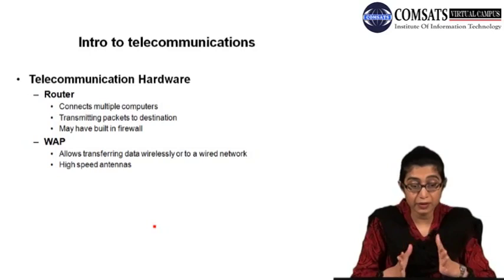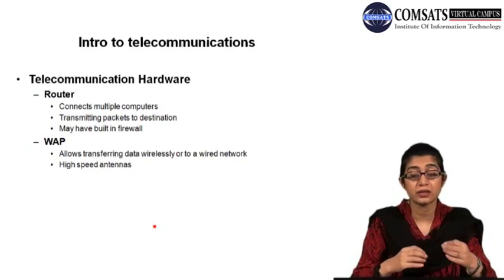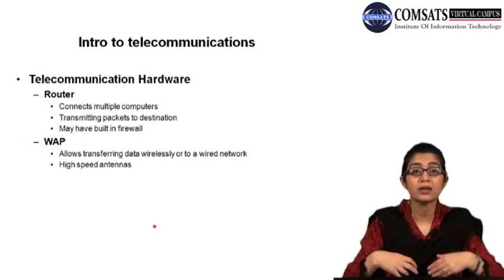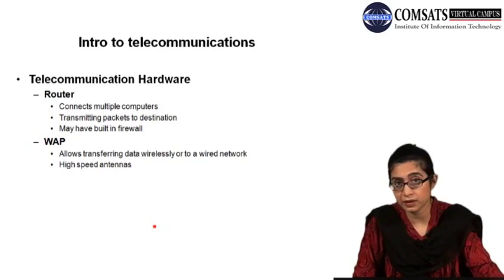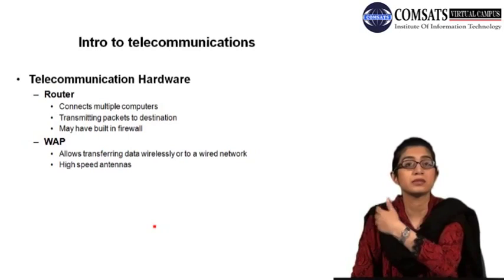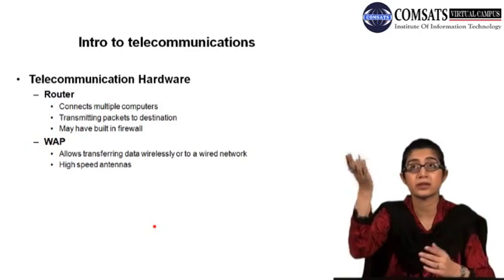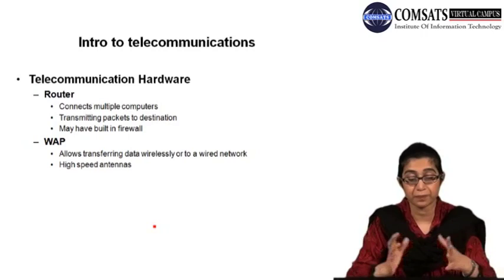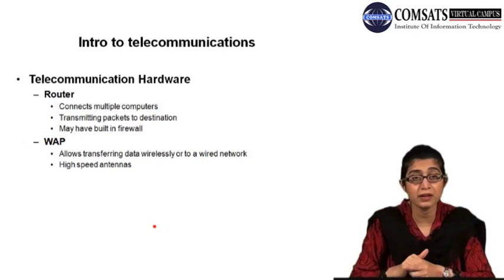Then we have a wireless access point. A wireless access point allows transferring data wirelessly between different devices, or it connects wireless devices to another kind of wired network. For example, if you are using an ethernet-based router, you can use that router with a wireless access point to provide wireless connection to devices with wireless capability. Wireless access points have high-speed antennas, and vendors usually ask you to place them on the ceilings for better access. An access point attached to the ceiling with antennas is your wireless access point.